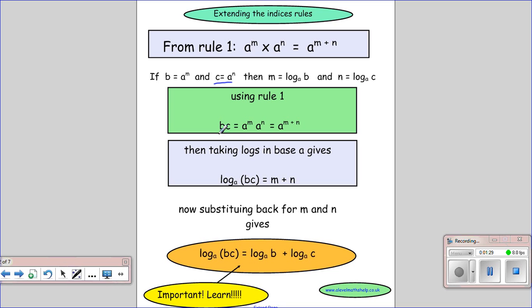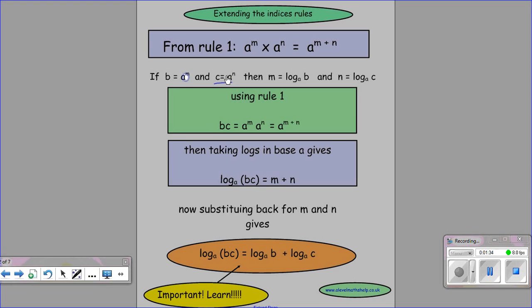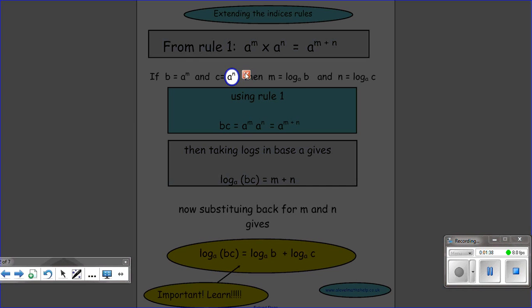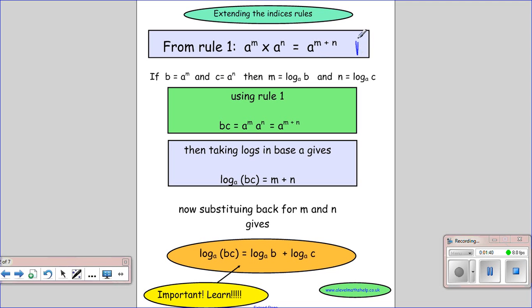Now, if we take b times c, we've actually got a to the m times a to the n. And then using our rule here, we can see that we just add these two powers to get a to the m plus n.